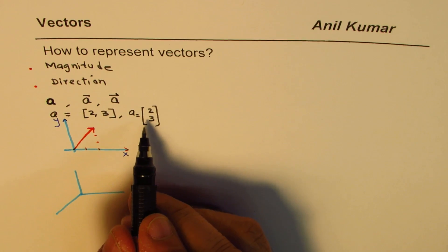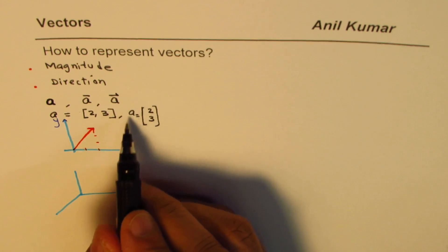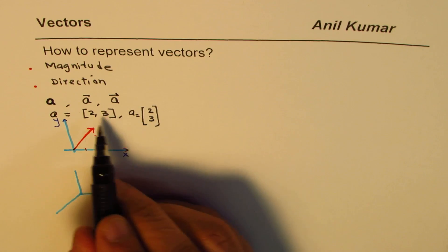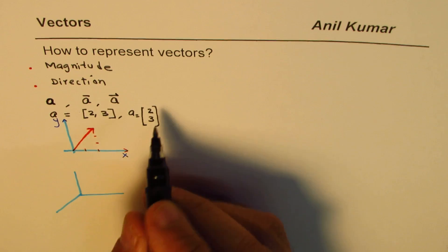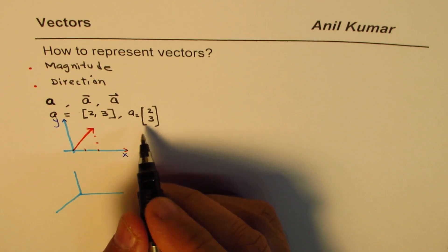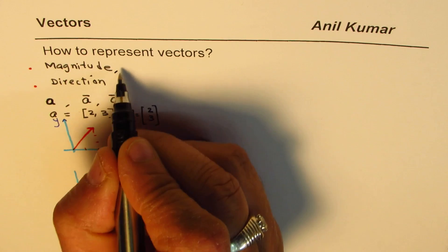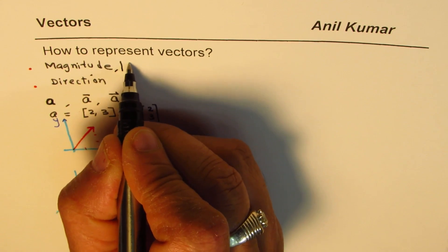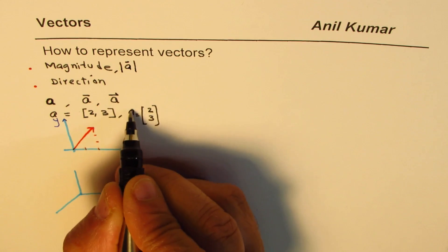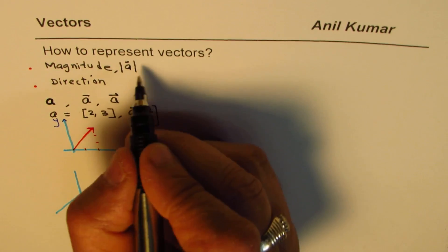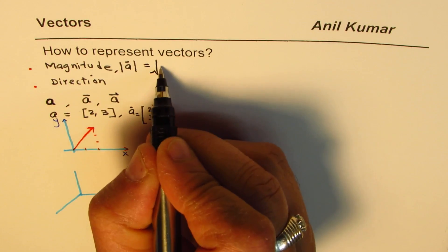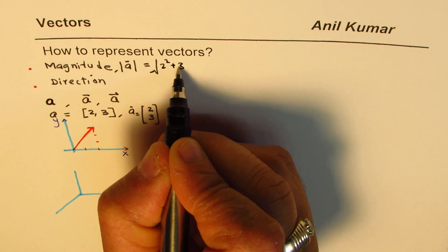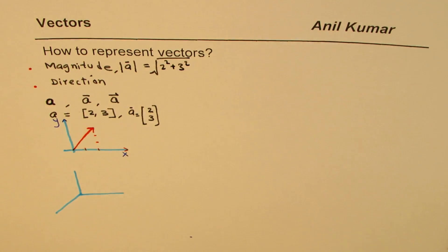Now what is the magnitude of this vector? The magnitude is the square root of the sum of squares of its components. So the magnitude of vector a equals the square root of 2² plus 3².